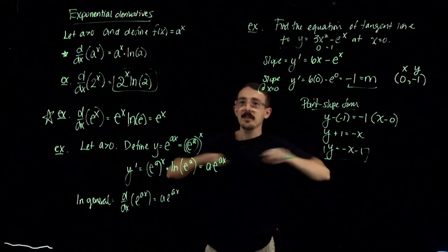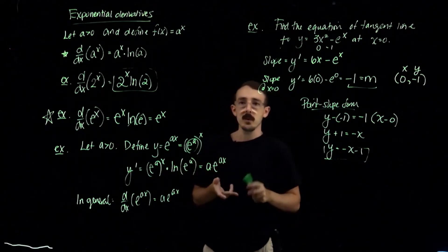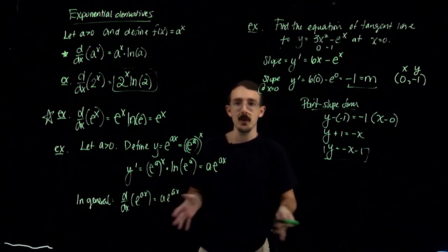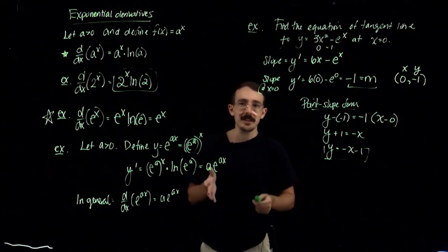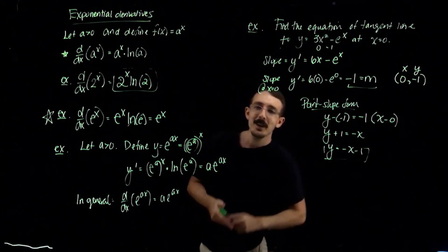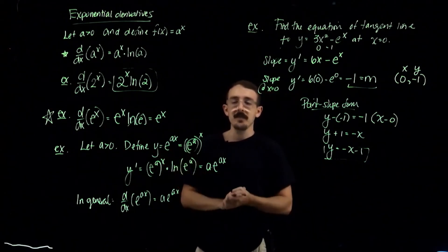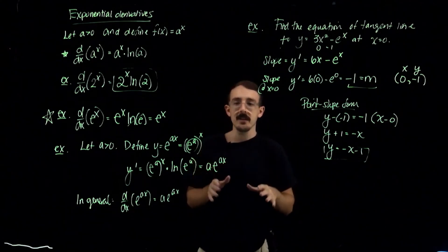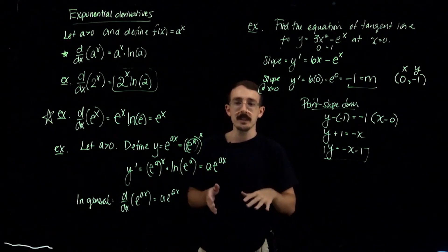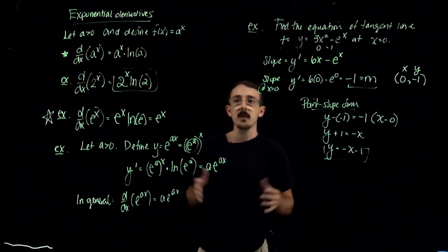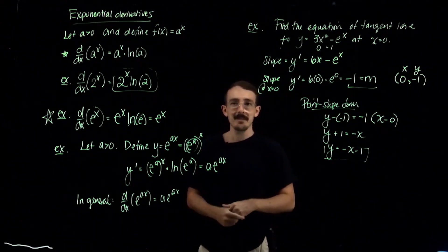We have covered the first two rules so far: power and exponential. Next time we'll do the product rule and quotient rule, and we'll keep building from there for this whole next exam period. Make sure you look at your lecture quiz 11. Under this video and every other video, I have the fall 2021 lectures posted as well in a separate link, so if you want even more lecture videos you can watch those. See you next time.